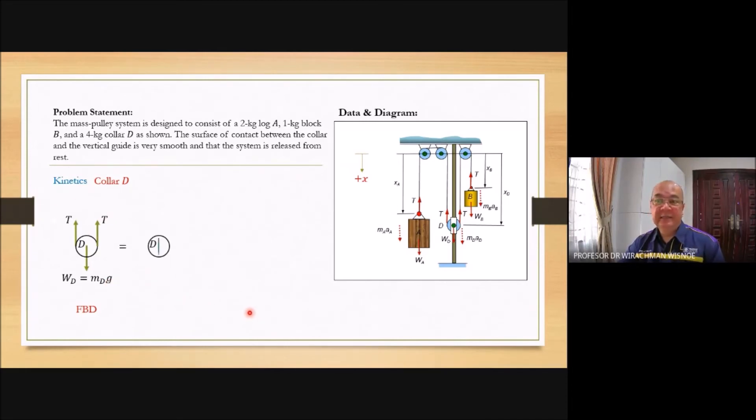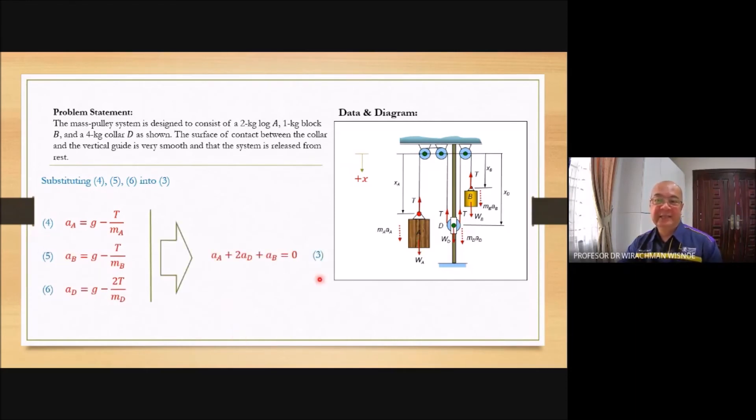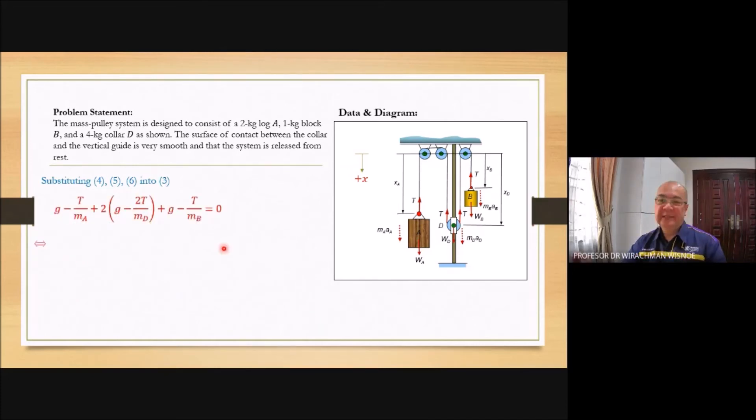For the kinetic. Assume downward. Repeat again. Sigma FX equal to MA. And then you express in this case AD. So I have AB, AA, AD. Put inside this equation. You obtain this one. And then you try to simplify it. From here you have the expression of T.